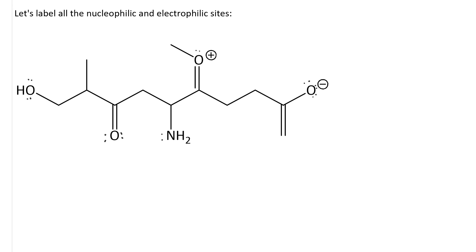The lone pairs are now drawn in. Let's start with nucleophilic sites. Any lone pair that's capable of becoming a sigma bond is nucleophilic, as is any pi bond. So, the hydroxyl group is nucleophilic. As is the carbonyl oxygen. As is the lone pair on nitrogen. As is the carbon-carbon pi bond. As is the alkoxide.